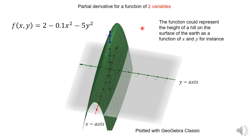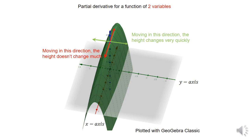Now what about a function of two variables? This plot shows the function 2 minus 0.1x squared minus 5y squared, which could represent the height of a hill above the surface of the earth. If you're walking along the x axis the height doesn't change much, it's very smooth. But if you walk in the y direction the height changes very dramatically. So the way the function changes in the x direction and the y direction are not the same thing.